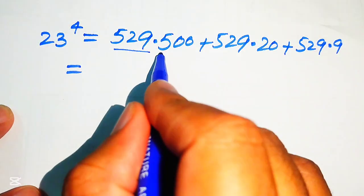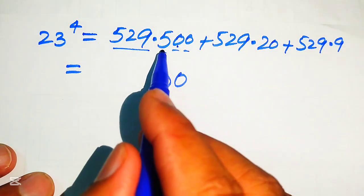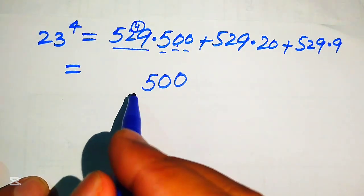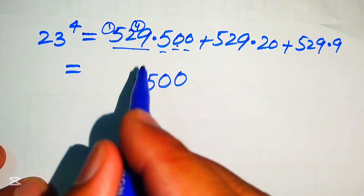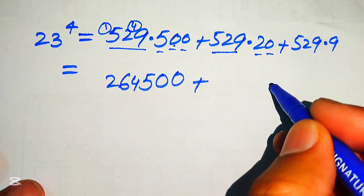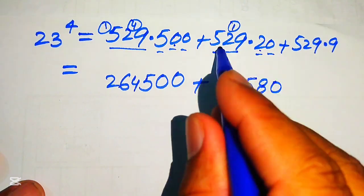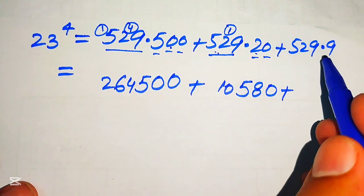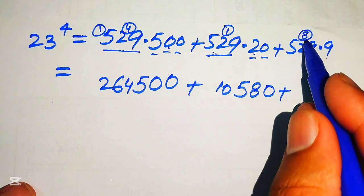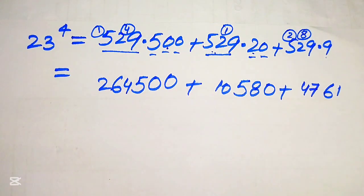We consider this as one-digit and three-digit multiplications. For 529 times 500: 0 times 529 is 0, 0 times 529 is 0, 5 times 529 — 5 nines are 45, write 5 carry 4; 5 tens are 50 plus 4 is 54, write 4 carry 5; 5 fives are 25 plus 5 is 30, giving 26450. For 529 times 20: 2 nines are 18, write 8 carry 1; 2 twos are 4 plus 1 is 5; 2 fives are 10 — giving 10580. For 529 times 9: 9 nines are 81, write 1 carry 8; 9 twos are 18 plus 8 is 26, write 6 carry 2; 9 fives are 45 plus 2 is 47 — giving 4761.